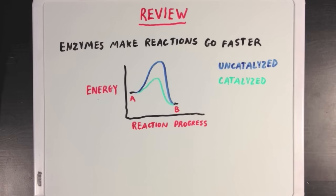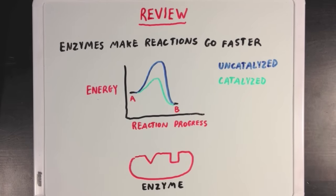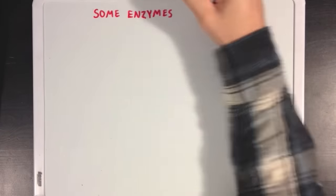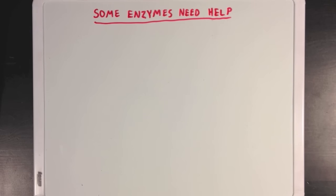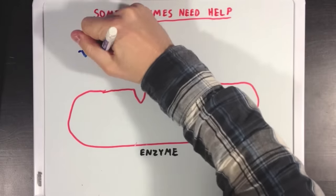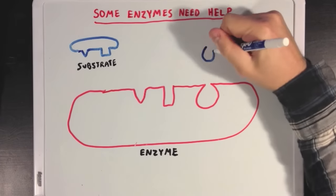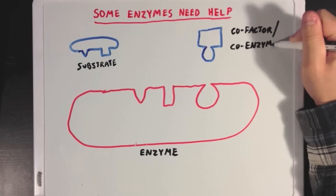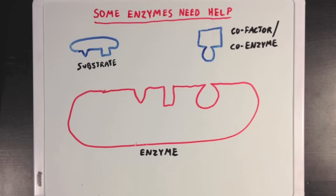Let's also review the idea that enzymes bind their substrates at a location on the enzyme called the active site, which is where most of the reaction takes place. Now, not all enzymes are able to catalyze reactions on their own, and some need a little help. So if we have our enzyme here trying to react with our substrate, sometimes something called a cofactor or a coenzyme will be needed, which will also need to bind to the enzyme in order for it to function properly.